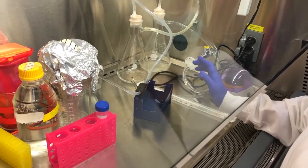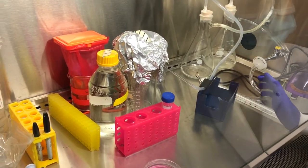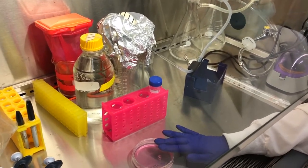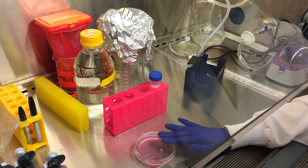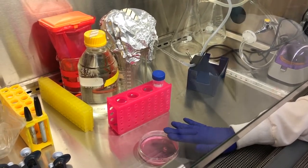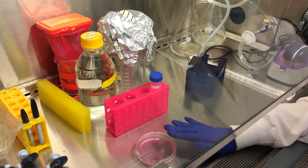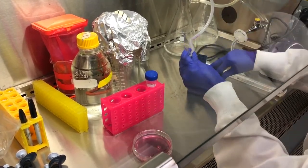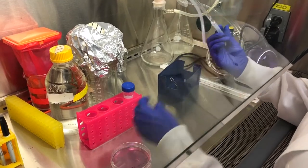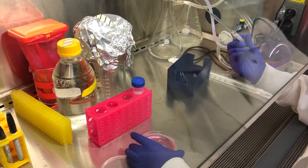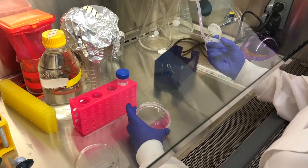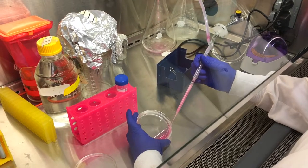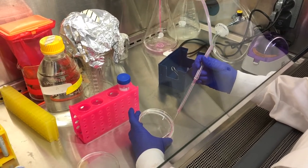So in order to first passage your cells, you're going to go ahead and aspirate the media from your original cell culture dish. And the cells are adhered to the bottom. So you won't be disturbing them when you aspirate the media. So I'm going to take this pipette and you just want to tilt the dish a little bit and get all of the media on one side.